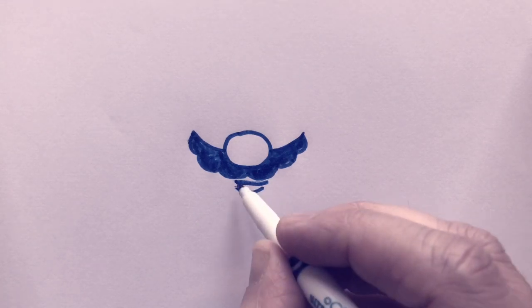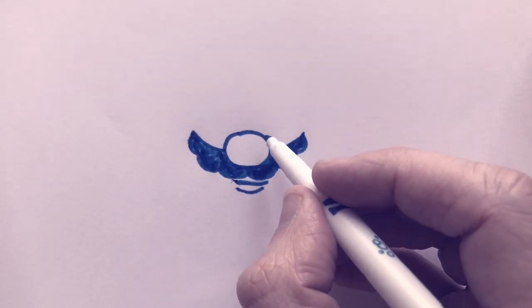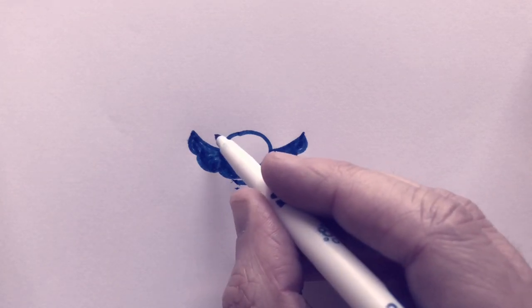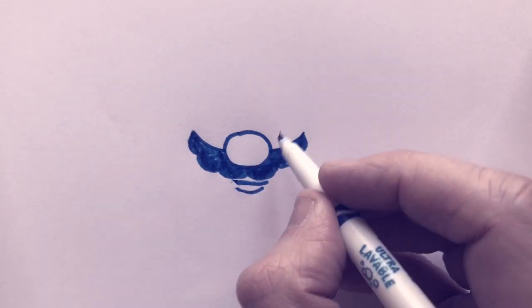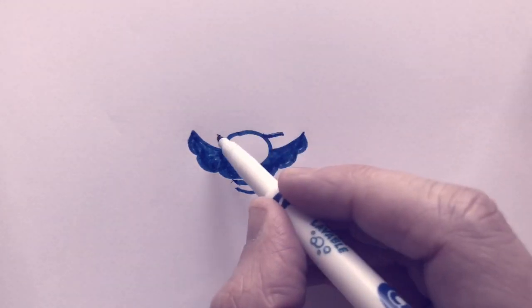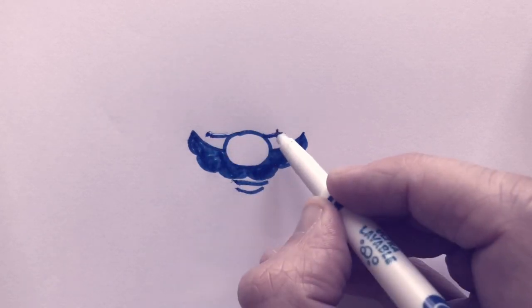Now we're going to start the bottom lines for the eyes. They're going to come off of the nose as well. Two shorter lines coming right off the top of that nose. Again, we're keeping it symmetrical, both sides are the same.